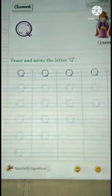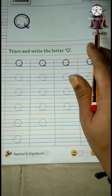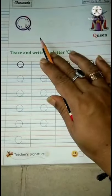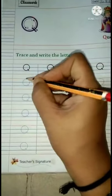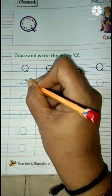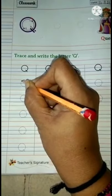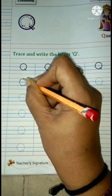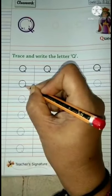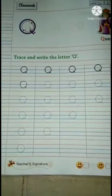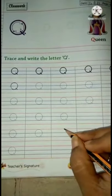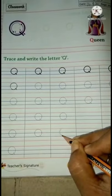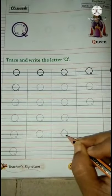Now we will trace and write capital letter Q. Q for Queen. Q sounds 'qua'. We will start from the top, draw one circle or O in this way, and then a small slanting line. It's capital letter Q.